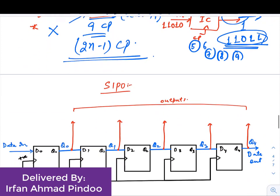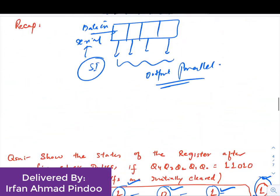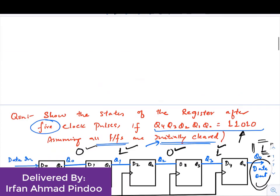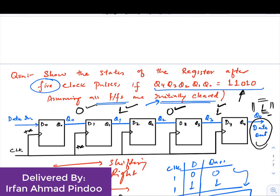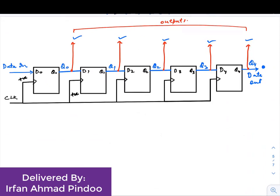The next type of register we will discuss is SIPO. If you look at this diagram, it is the same diagram except that instead of having output only from one side, I am taking output from all the flip-flops — you can see here. This is the major difference between SIPO and SISO. In SISO the output was only at one flip-flop, and here we are taking output from all the flip-flops.